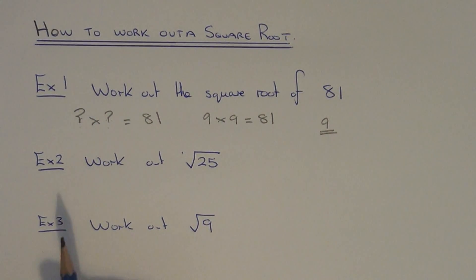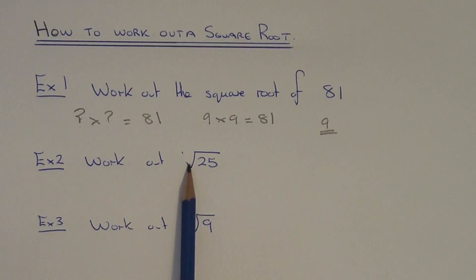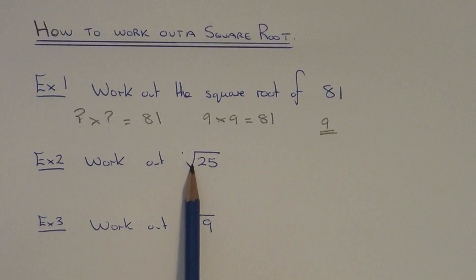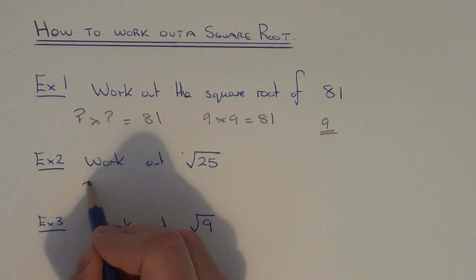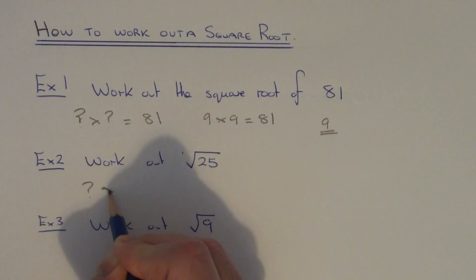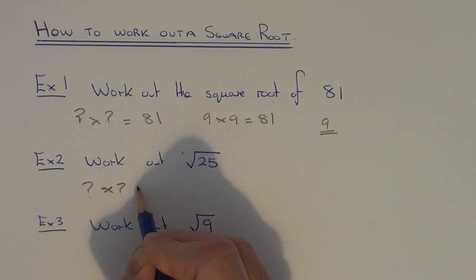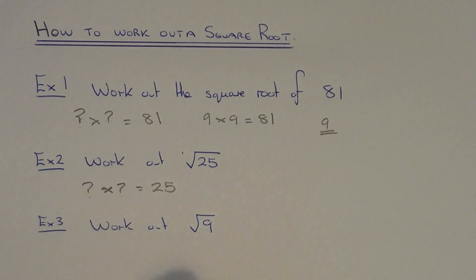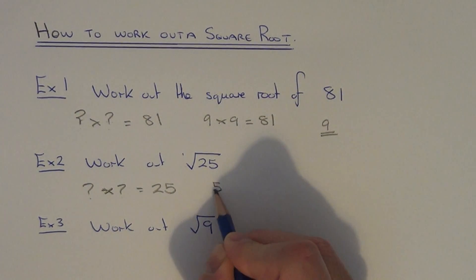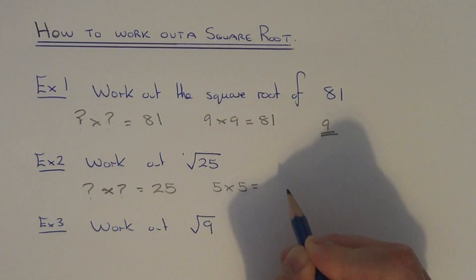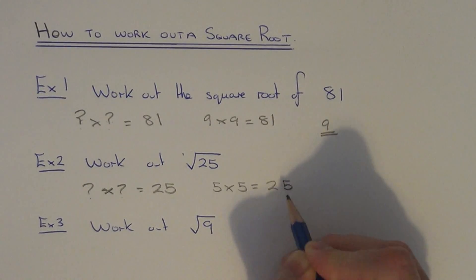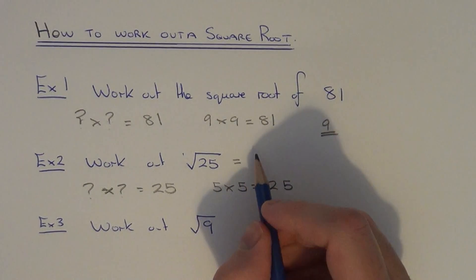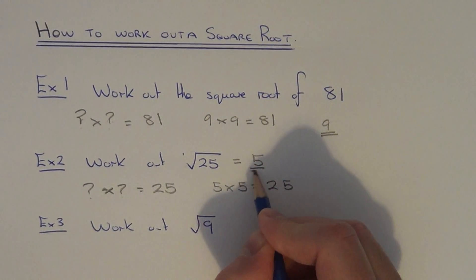So let's move on to example two. This time we need to work out the square root of 25. This little symbol here means the square root. So again we need to think of a number when multiplied by itself gives us 25. The number we're looking for this time is 5 because 5 times 5 equals 25, so the square root of 25 is 5.